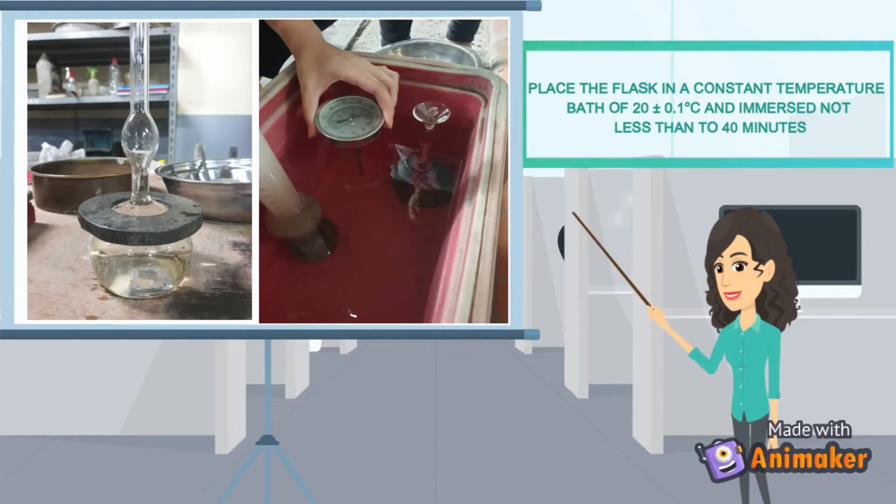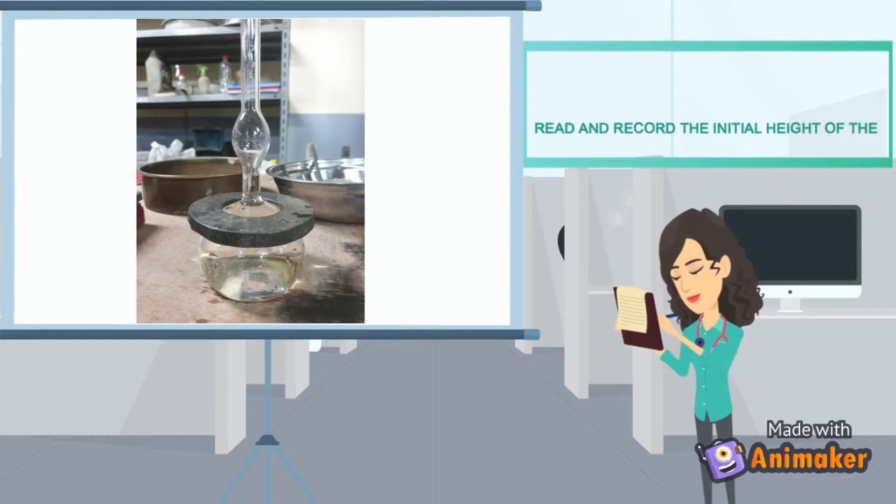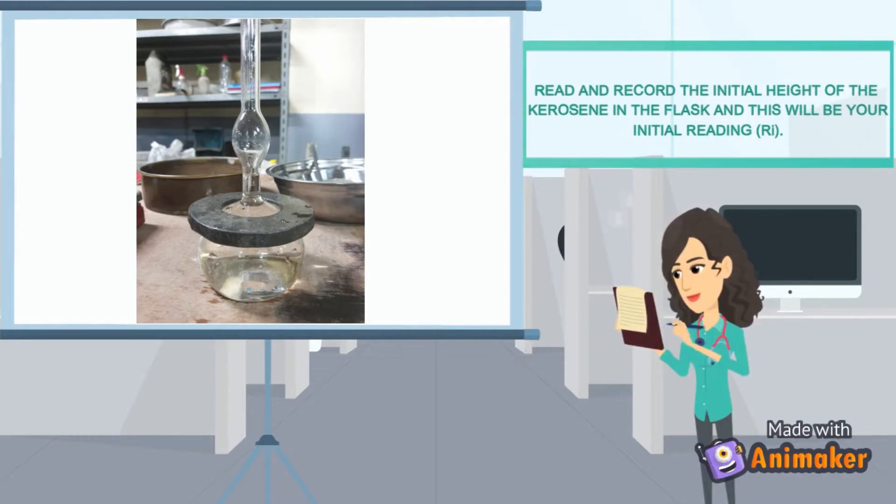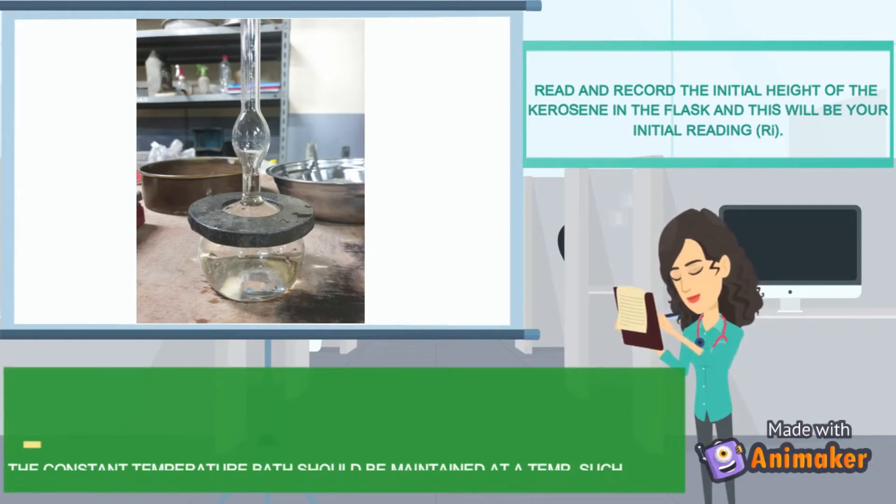Place the flask in a constant temperature bath of 20 plus or minus 0.1 degrees Celsius and immerse not less than 40 minutes. Read and record the initial height of the kerosene in the flask and this will be your initial reading.